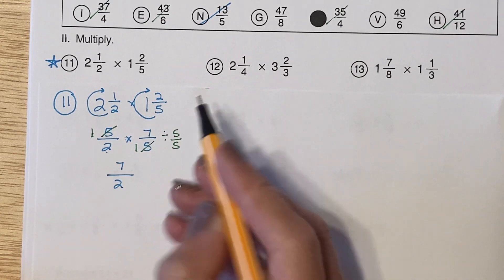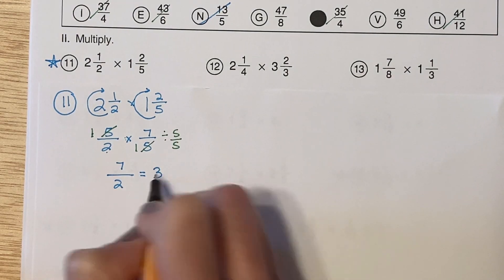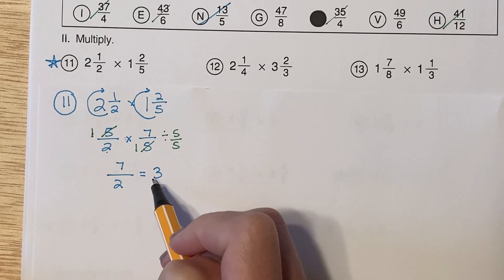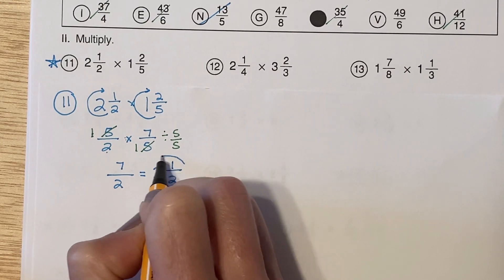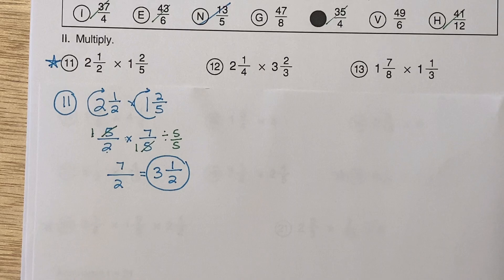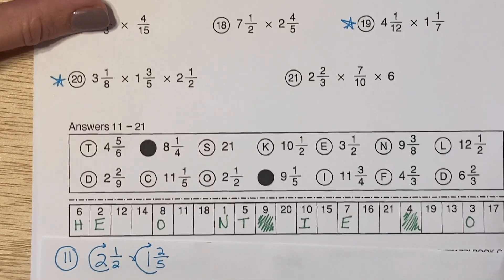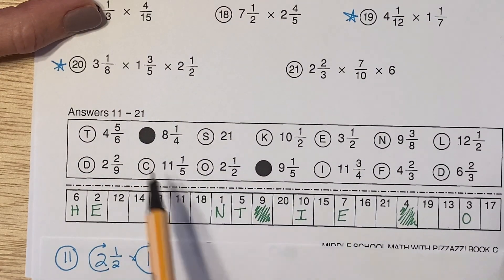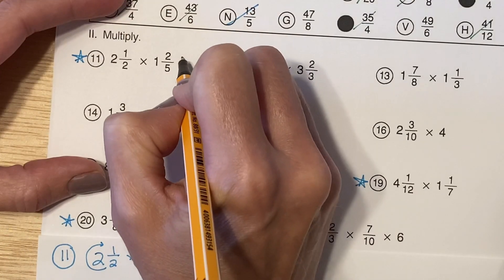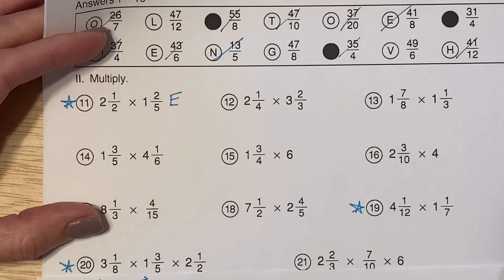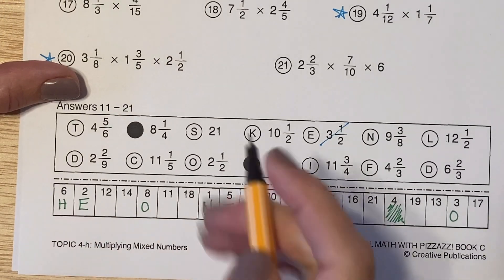Let's go ahead and convert that back into a mixed number. Seven halves — how many times does two go into seven? It goes in three times. I'm going to take out two groups of three, that's six. Seven minus six is one, and then my denominator stays the same. Seven halves is three and a half. Looking at the answer key for numbers 1 through 21, I'm looking for three and a half — that's answer E. I'll cross that off and write E next to number 11 and put it in my answer key.